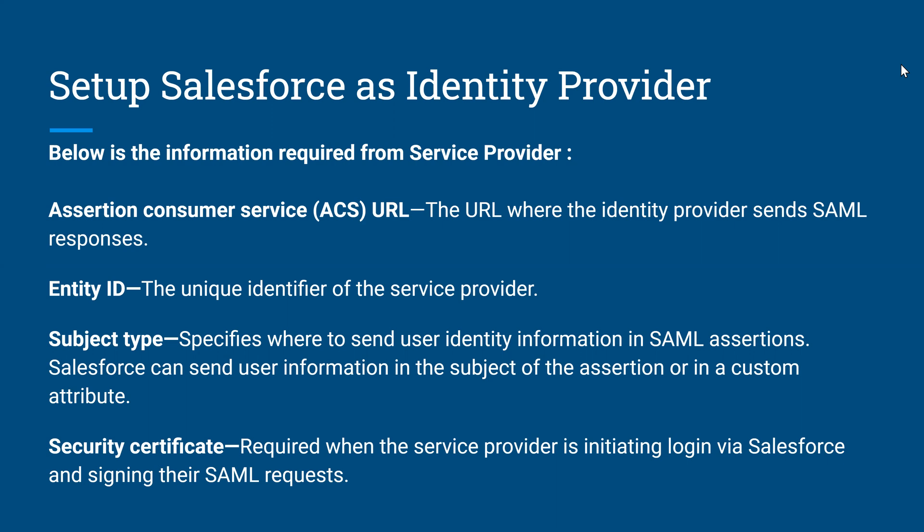The ACS URL is where the identity provider will send that SAML response. The second point is Entity ID, which is just a unique identifier of the service provider — nothing much more than that.